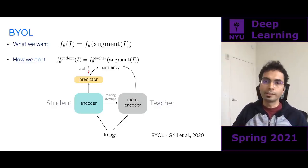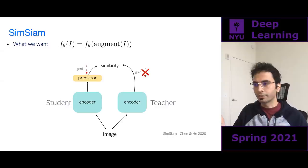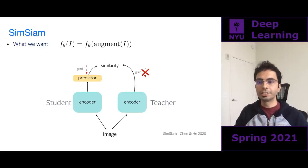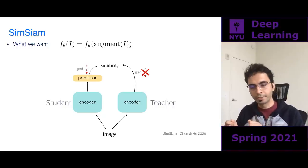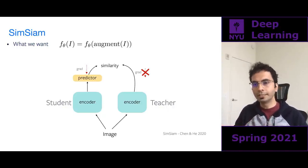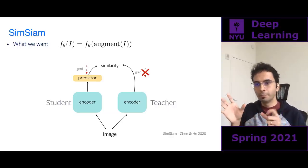Do you need all three sources of asymmetry? It turns out not. In 2020 another set of authors introduced SimSiam, which shows you don't need all three. In particular, the student and teacher can share the exact same weights — and all you need are two sources of asymmetry: the student uses a special predictor head on top, and the other asymmetry comes from the learning rule.